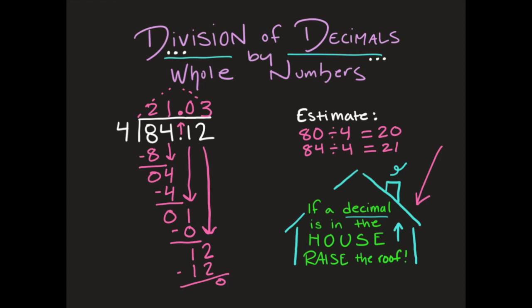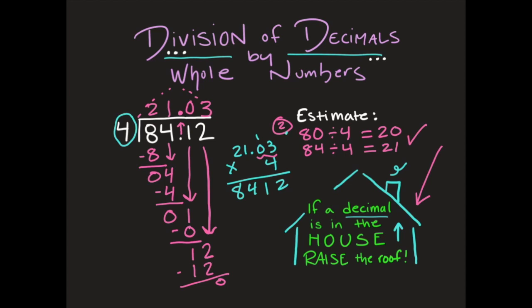12 minus 12 is 0, so I do not need to add another zero. My answer is 21 and 3 hundredths, which is very close to our estimate. To check your work, take your quotient and multiply it by the divisor. I count two digits behind the decimal point. Four times 3 is 12, 4 times 0 is 0 plus 1, 4 times 1 is 4, 4 times 2 is 8. Placing the decimal two spots in gives 84 and 12 hundredths — exactly the same as the dividend. Check!